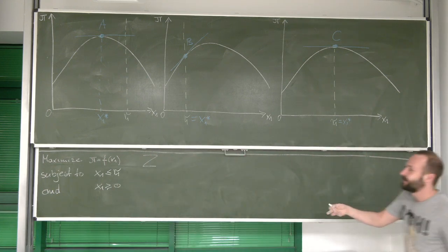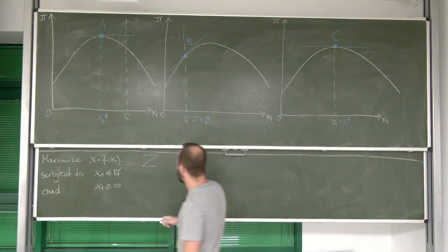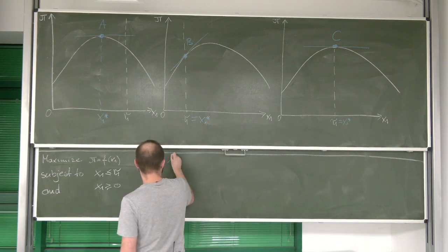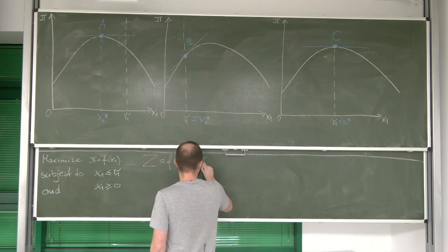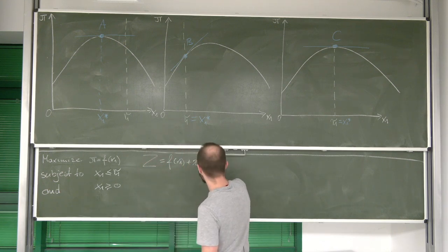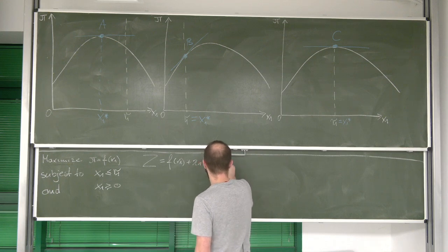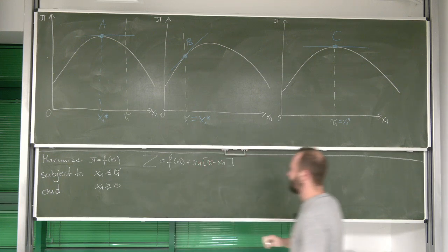First, we're going to have f of x1, then plus lambda 1 times r1 minus x1.